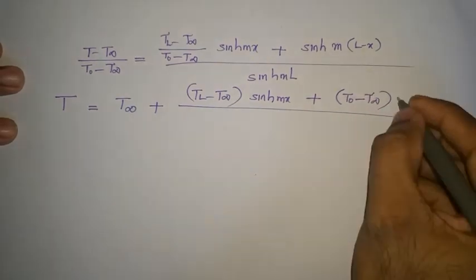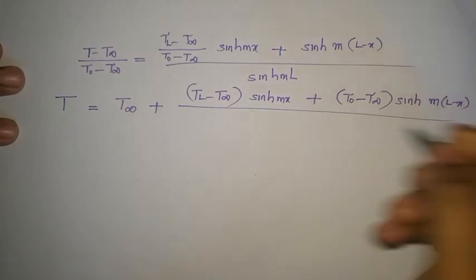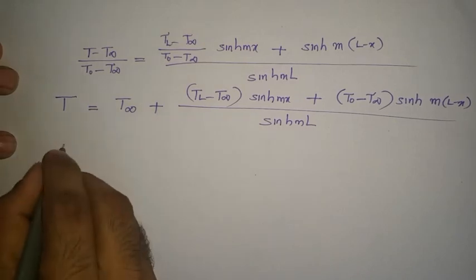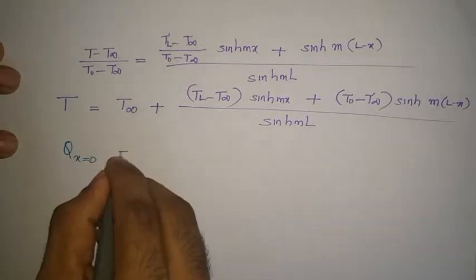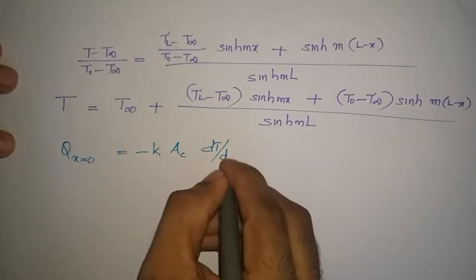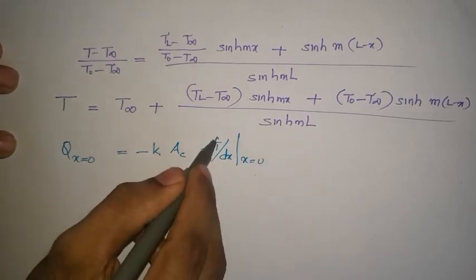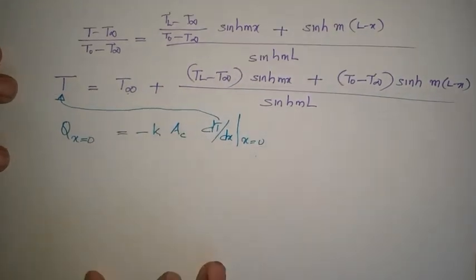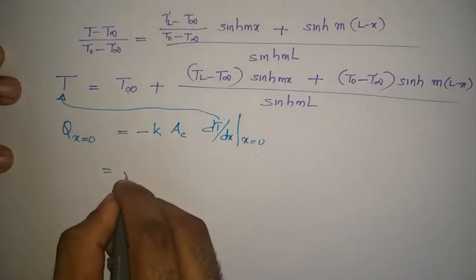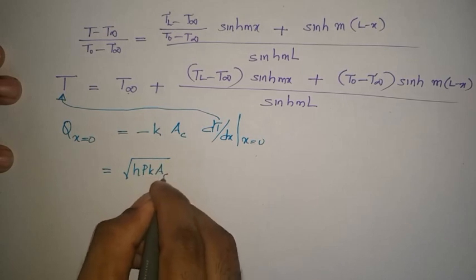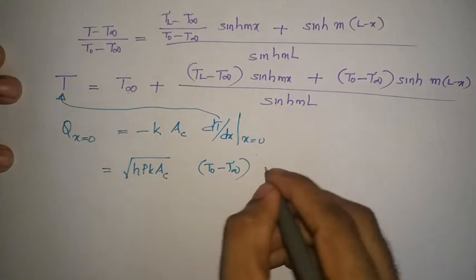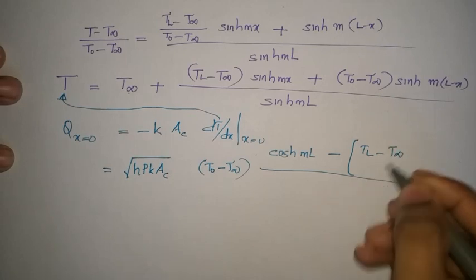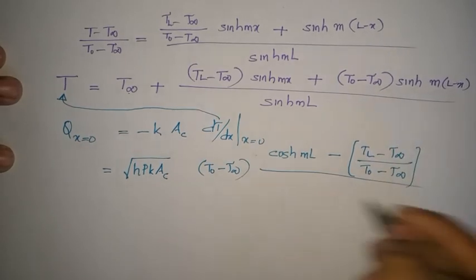The general temperature expression gives T at any x. Taking the derivative dT/dx and substituting into Fourier's law, Q at x=0 is: Q(x=0) = √(H × P × K × A_c) × [(T₀ − T∞) × cosh(mL) − (T_L − T∞)] / sinh(mL). Substituting all given values yields Q(x=0) = 69.88 W.